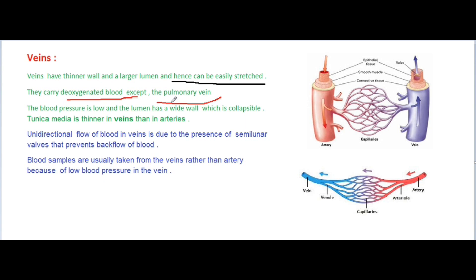Pulmonary artery carries impure blood to the lungs for oxygenation. From the lungs, pulmonary vein carries pure blood into the heart. So we cannot always say veins carry deoxygenated blood — the exceptional case is the pulmonary vein, which carries oxygenated blood from the lungs to the heart.